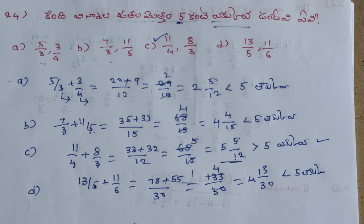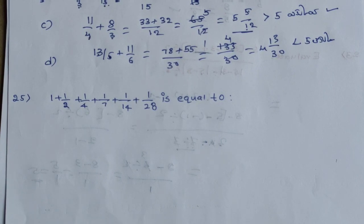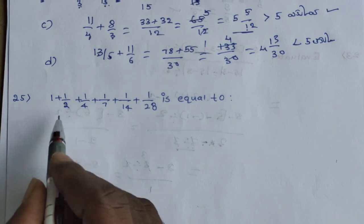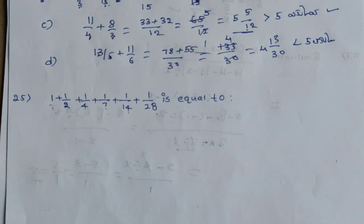RRB NTPC question: find the value of 1 plus 1 by 2 plus 1 by 4 plus 1 by 7 plus 1 by 14 plus 1 by 28. First, the denominators are 1, 2, 4, 7, 14, 28.